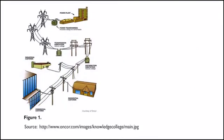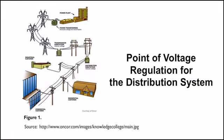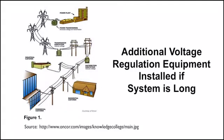Another important feature of electric substations is the capability of isolating faults in either incoming transmission systems or outgoing distribution systems. These substations are oftentimes the point of voltage regulation for the distribution system, and additional voltage regulation equipment may also be installed along the distribution system if the system is miles long.